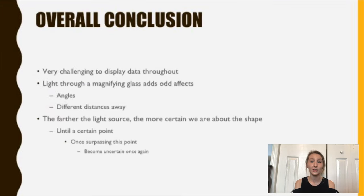So my overall conclusion, I thought it was very challenging to display the results throughout. And that the light through the magnifying glass adds odd effects. And some of these effects can come from the angle of the magnifying glass and at the different distances that you use from the light source. And the farther the light source, the more certain we are about the shape. But this is only until a certain point because once you surpass this point, you become uncertain once again.